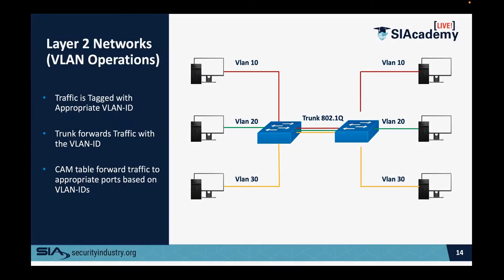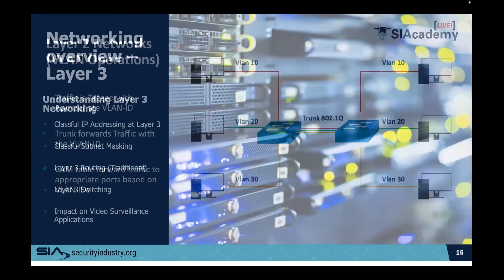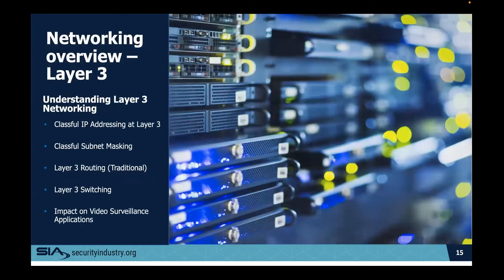When you want to go outside of layer two or move to a layer three entity, we're talking about layer three network switches. Layer three network switches allow you to route or take traffic between isolated VLANs and allow them to intercommunicate.